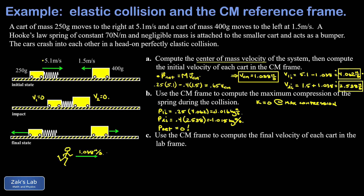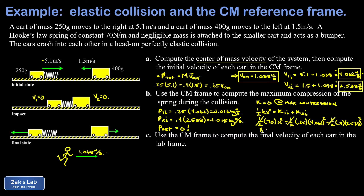We set up energy conservation: ½kx² equals the initial kinetic energy of both carts in the CM frame. The spring constant k = 70 N/m, and x is the unknown compression. Plugging in: ½(70)x² = ½(0.25)(4.062²) + ½(0.4)(2.538²). Multiplying through by 2, combining the numbers, dividing by 70, and taking the square root gives a compression distance of 0.309 m, or 30.9 cm.